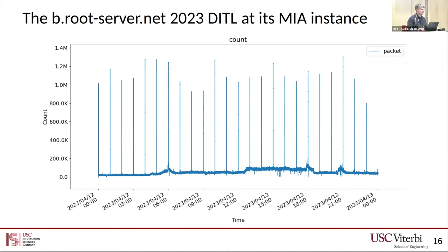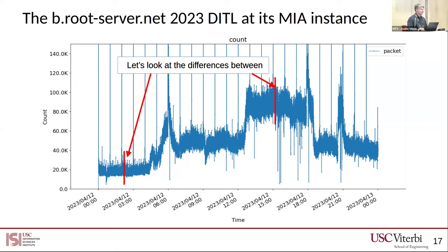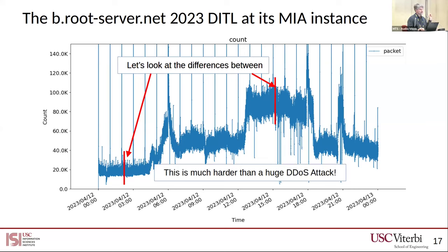So let's go back to internet traffic. This is from the 2023 Diddle data set at the USC root server's Miami instance. There's a number of weird things — really large spikes, and somebody doing random queries nearest to Miami so we only see this weird stuff there. I want to look at the more detailed in-depth graph. There are stair steps — this is not normal, this is somebody doing something different. This is much harder to analyze than a gigantic DDoS attack. If you just looked through all the data at any of these points, you'd just see a bunch of random stuff.